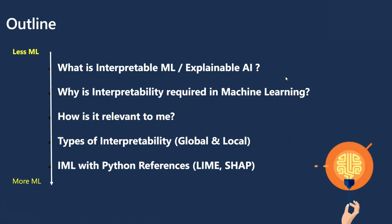Why is interpretable machine learning required? How is it even relevant to you? We'll look at types of interpretability — global and local — and then interpretable machine learning with Python. Specifically, we'll talk about two methods called LIME and SHAP. That's where you need ML understanding, but until then you probably don't need any ML.